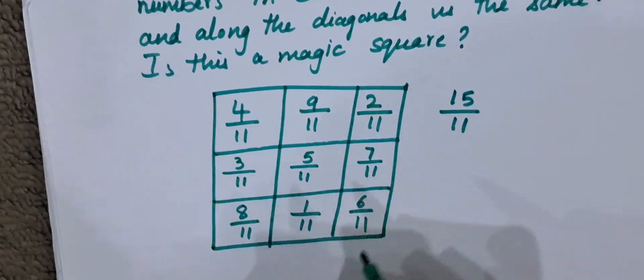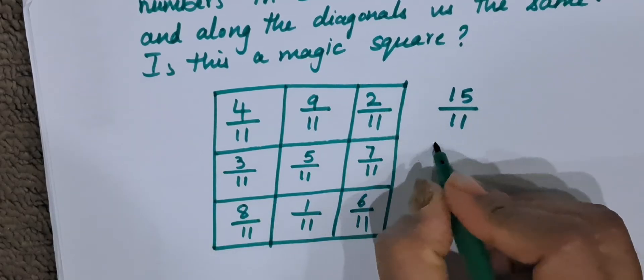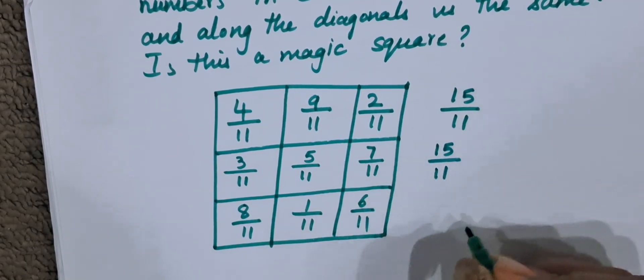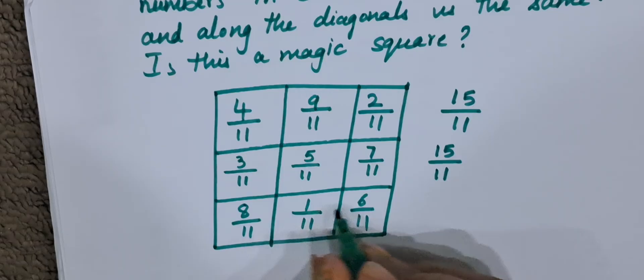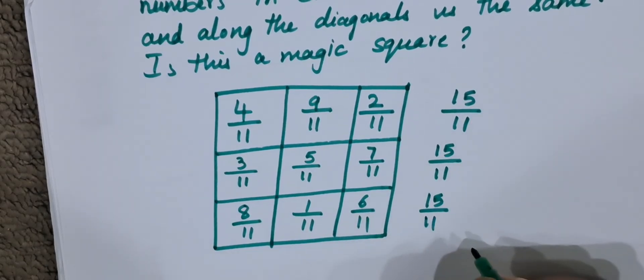Now, here 3 plus 5 is 8, 8 plus 7 is 15 again. 15 by 11. Now in the third column, 8 plus 1 is 9 plus 6 is 15. So the answer is 15 by 11.